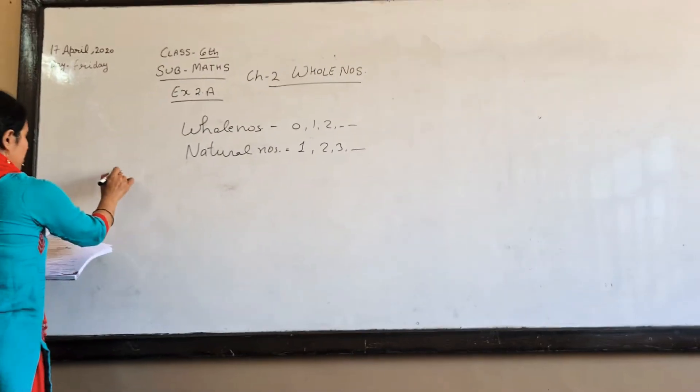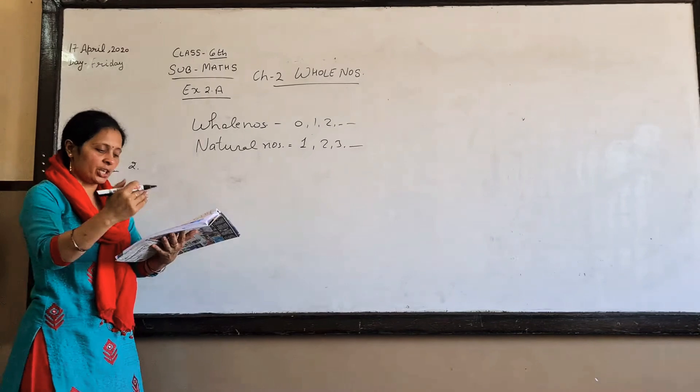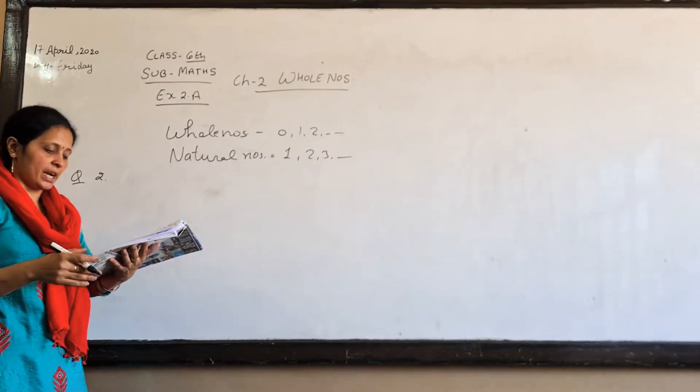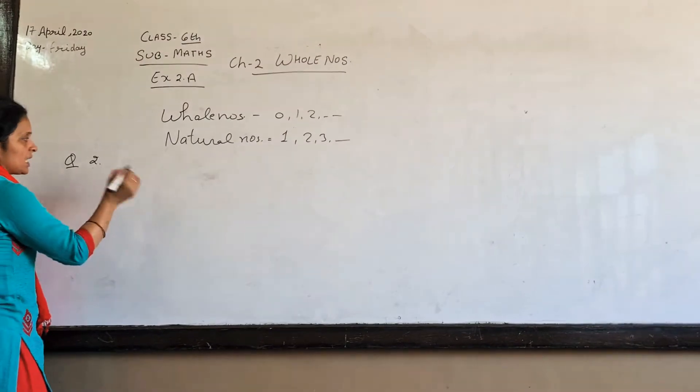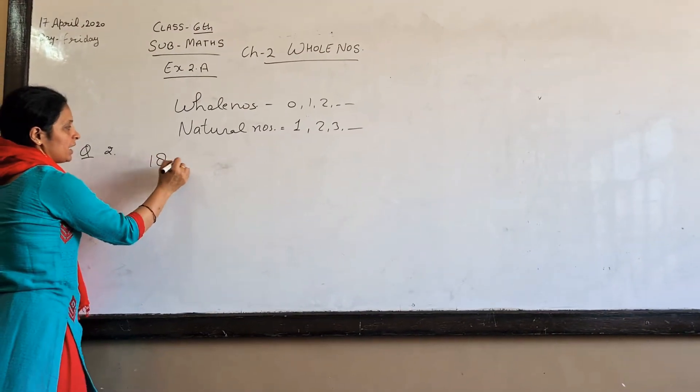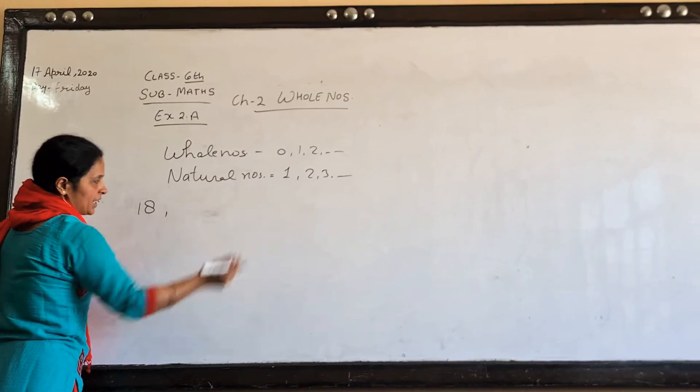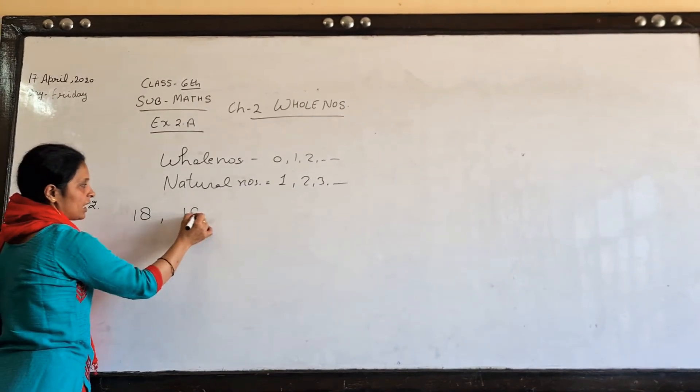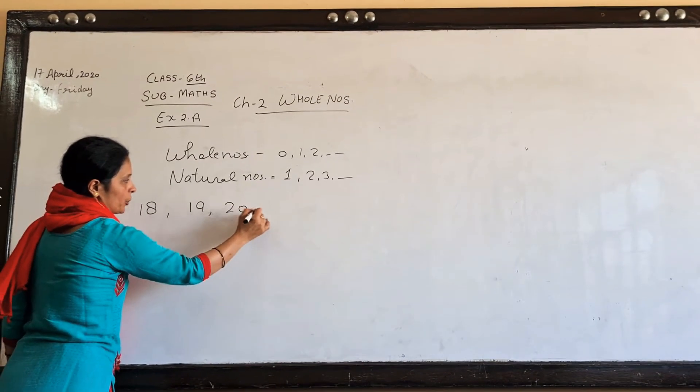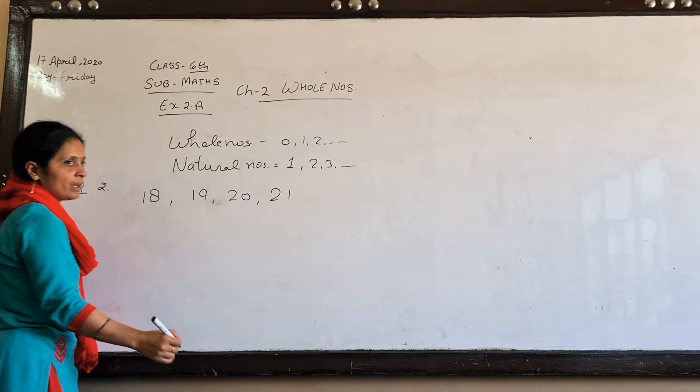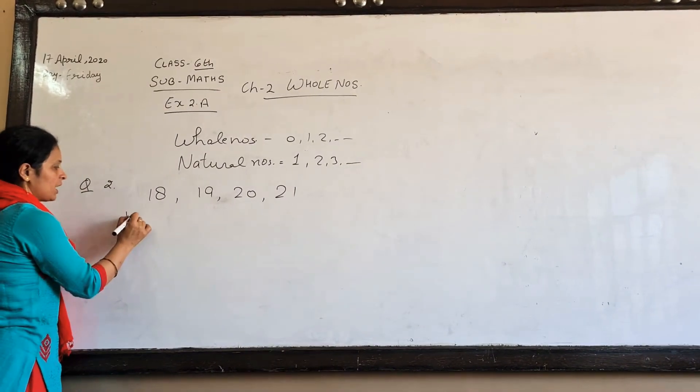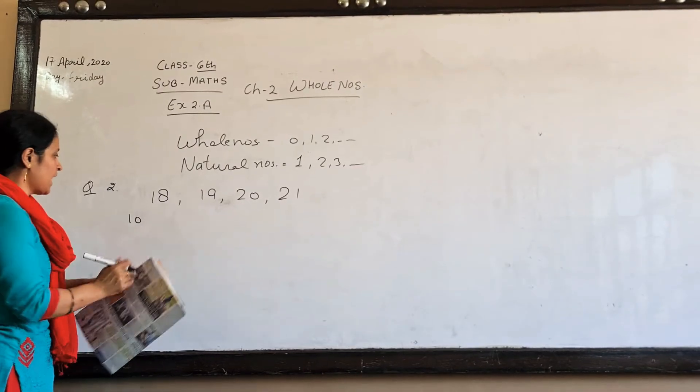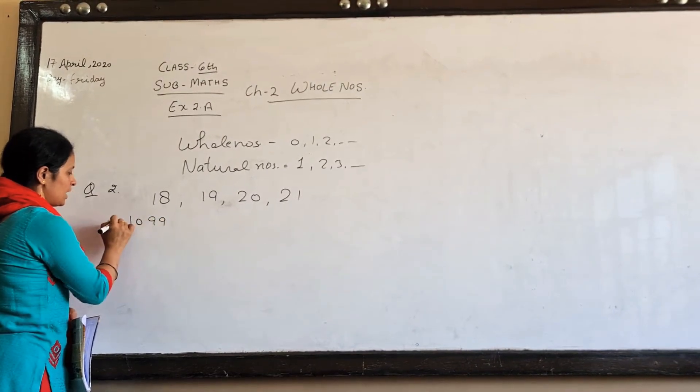Question numbers are starting with one. You have to tell the number. Here the numbers are 18, 19, 20, 21. You can get these numbers compared to other numbers.